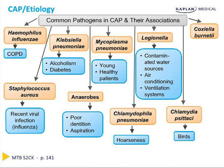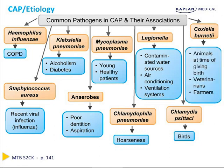Lastly, Coxiella is another less common cause of pneumonia, and this is usually in people who have very close contact with animals at the time of giving birth, or in veterinarians or farmers.